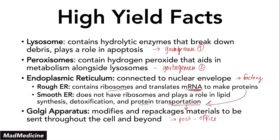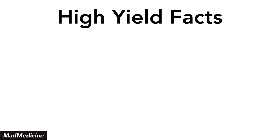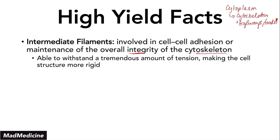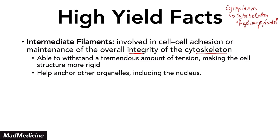Then we have the highway system, which we can find in the cytoplasm. Within the cytoplasm, we have a network of highways called the cytoskeleton. The cytoskeleton is made up of three main things and is essentially the highways — or roads — in cell city. The first component is intermediate filaments. These are involved in cell-to-cell adhesion and the integrity of the cytoskeleton. They can handle a lot of tension and make the cell very rigid. They also anchor organelles like the nucleus in place, which is important for preventing damaging interactions.